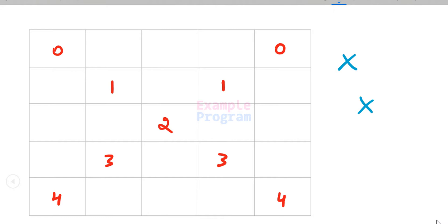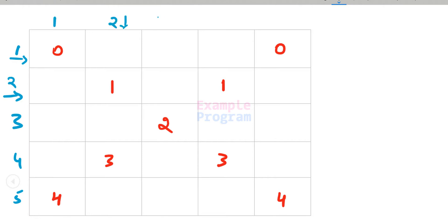Let's begin with this program. The first thing I am going to do is divide this pattern in terms of rows and columns. This is the first row, second row, third row, fourth row, and fifth row. Similarly, this is the first column, second column, third column, fourth column, and fifth column.